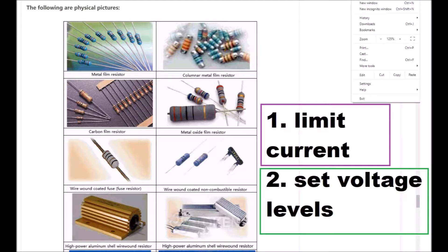Resistors perform two basic functions in electronics. First, they limit current flow, and they set voltage levels within a circuit. Those are the two primary functions of a resistor in a circuit — to limit current flow and to set voltage levels.